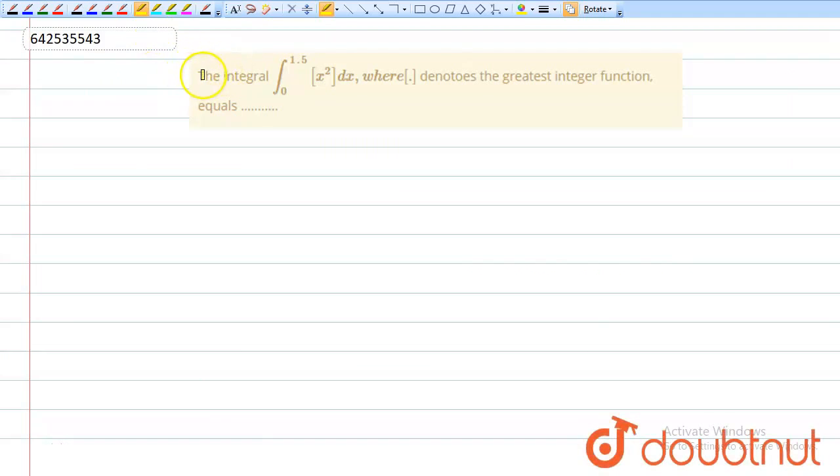The question is: evaluate the integral from 0 to 1.5 of [x²]dx, where the brackets denote the greatest integer function. We will solve this question. Looking at the lower limit, when x equals 0, x² also becomes 0.